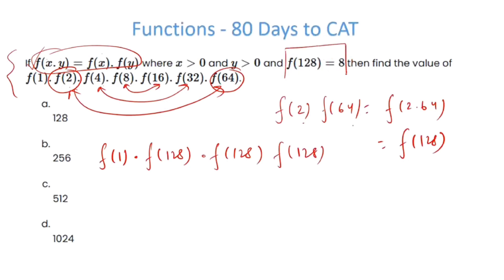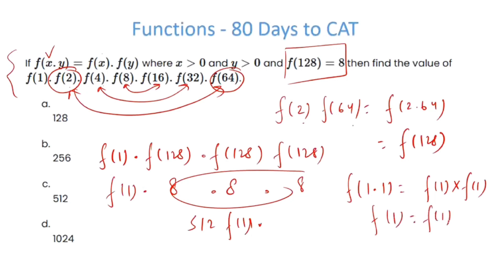Now I know the value of f128, that's 8. If I put 8, 8, and 8 here, this becomes f1 times 8 cubed which is 512 times f1. You put x is equal to 1, y is equal to 1, so f1 squared is equal to f1 times f1, so f1 is equal to f1 squared. So what values can I take? I can take f1 as 0, I can take f1 as 1. Quite clearly from the answer options itself I can't take 0, so leave it behind. The answer becomes 512.